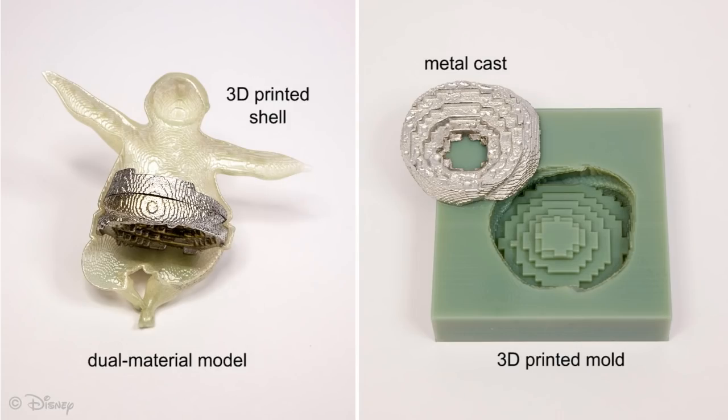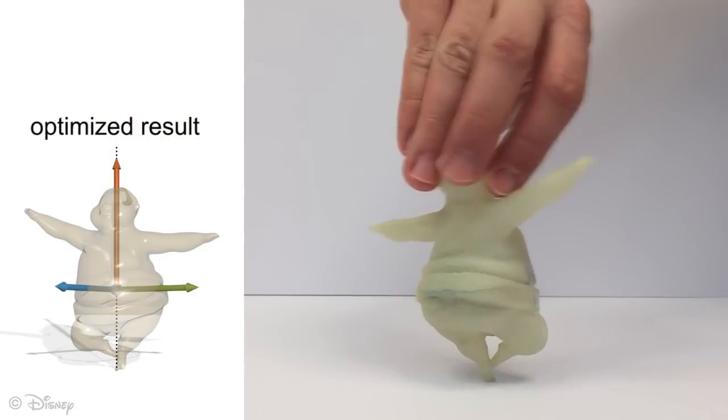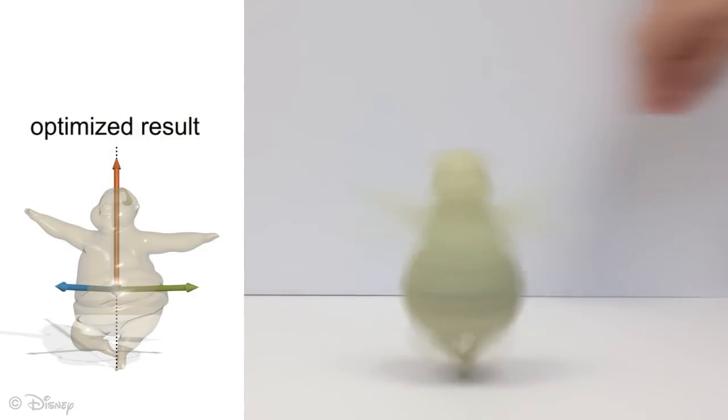For models where hollowing is not sufficient, we introduce multiple materials into our optimization. The metal interior is cast from a 3D printed mold. Here we show the resulting spinning sumo wrestler.